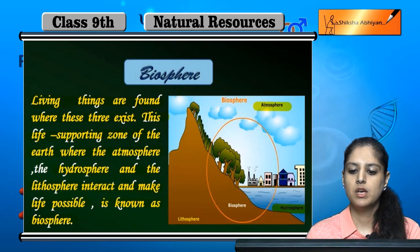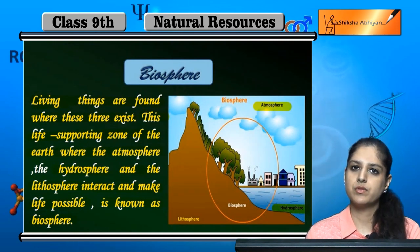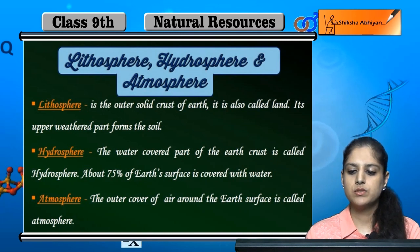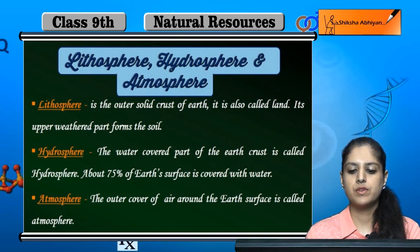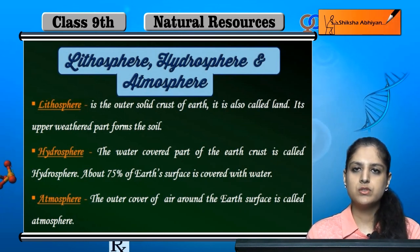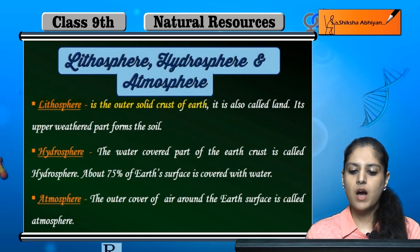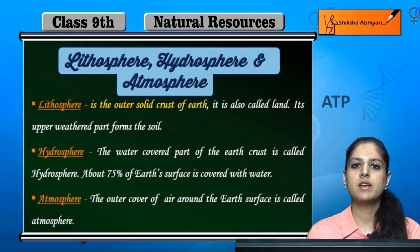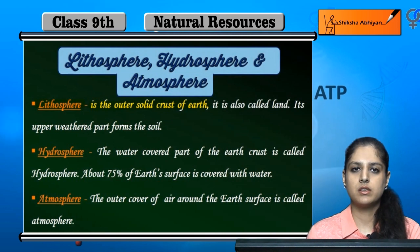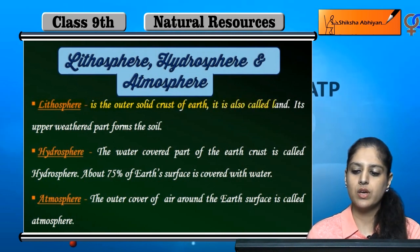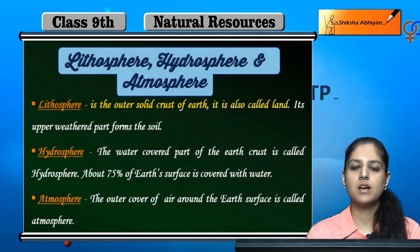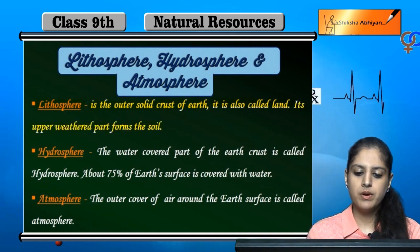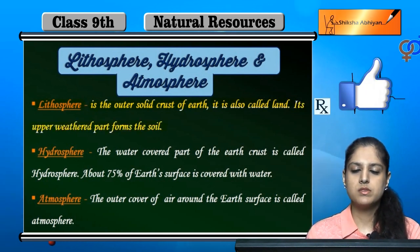The biosphere has three types: lithosphere, hydrosphere, and atmosphere. The lithosphere is the outer solid crust of the earth. Its surface is called land, and its upper weathered part forms the soil.